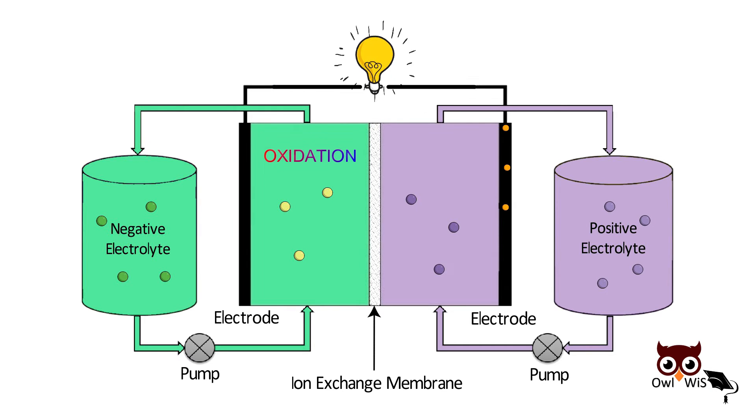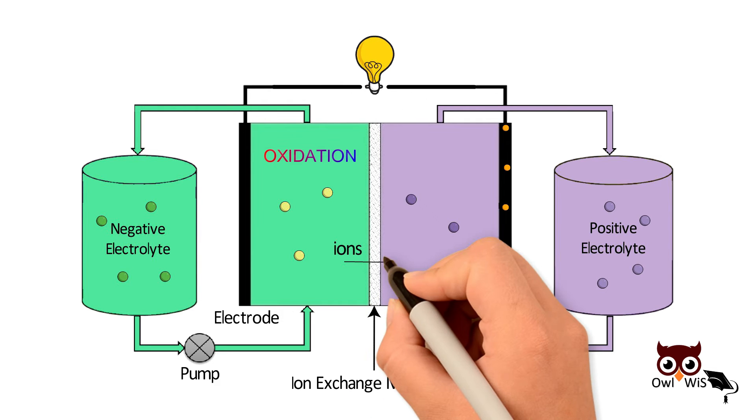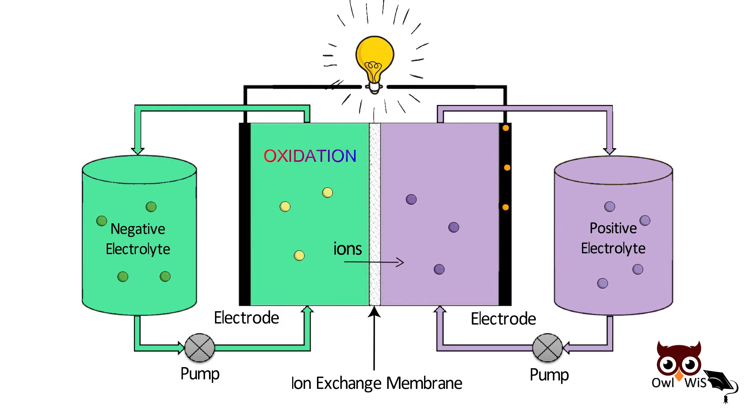In addition to the movement of electrons, there are ions, other charged species in the electrolyte that pass through the membrane to help complete the reaction and keep the system electrically neutral. At the positive side, the electroactive species gain the electrons to undergo reduction reaction.